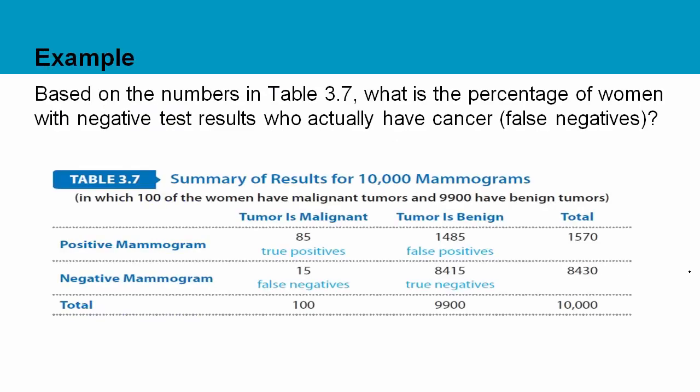Let's look at an example with this in mind. Based on the table below, what is the percentage of women with negative test results who actually have cancer? Negative test results who actually have cancer — that's a false negative. Now you might think, well, cancer is a bad thing, so if you have cancer doesn't that mean you have a negative test result? No. A positive test result means it shows up for what you are testing for. If you are testing for cancer and you have cancer, the test will come back positive, saying it has found the cancer. A negative means you don't have what you are testing for, so in this case you wouldn't have cancer.